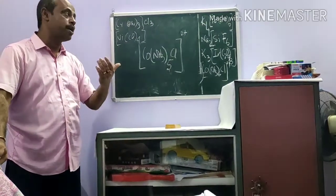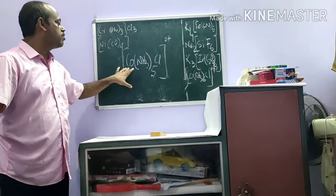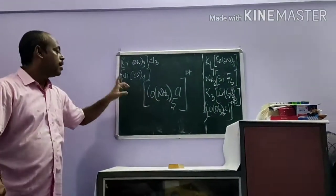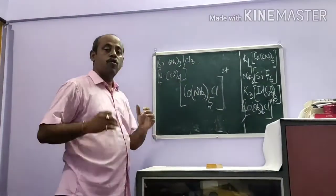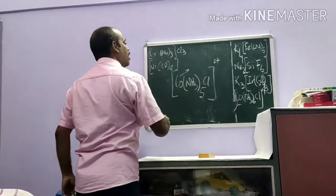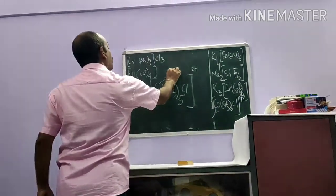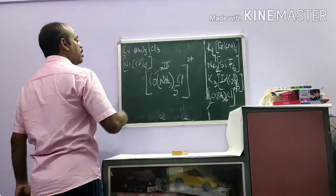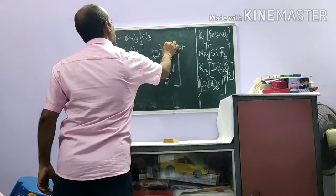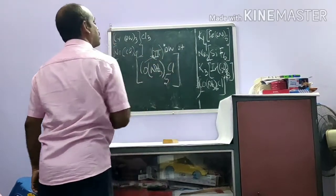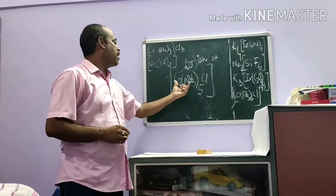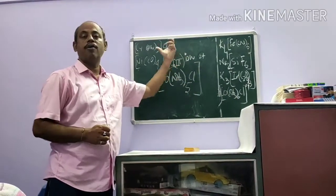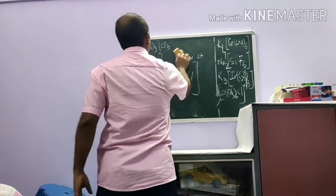If it were in the negative sphere it would be cobaltate, but it is in the positive sphere so it is cobalt. The oxidation number works out to be Roman III. And because the complex is in cationic form, the word 'ion' must be added at the end. So the full name is pentaamminechloridocobalt(III) ion.